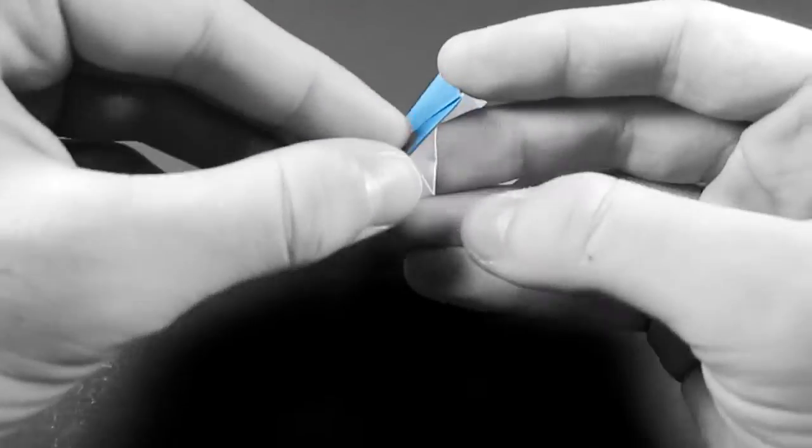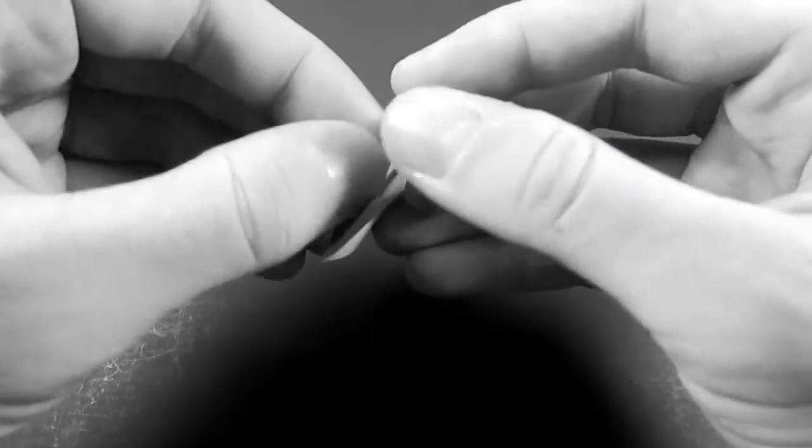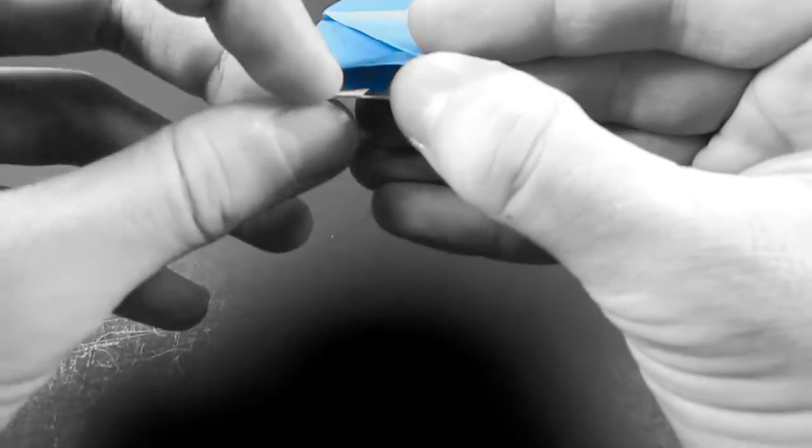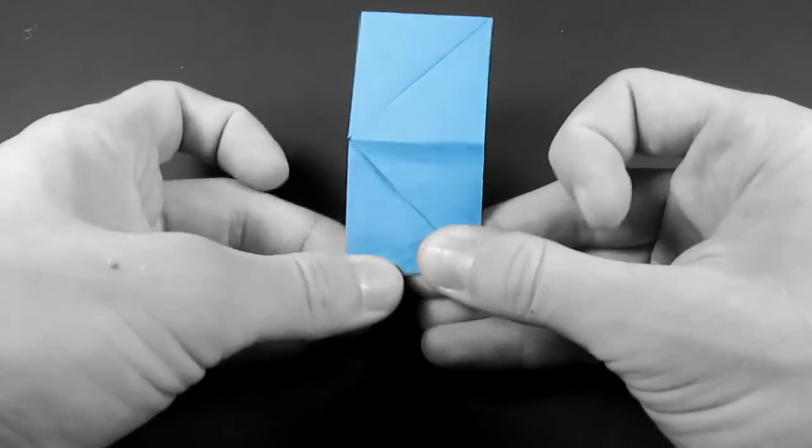We'll just fold this flap here up to the edge. And then we'll just tuck it underneath this top flap here. We'll fold it over, lift the topmost edge. And there should be a pocket in here. Just fold over and flip that inside. And there we go.